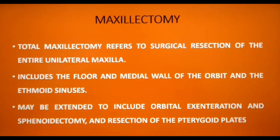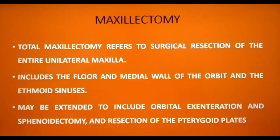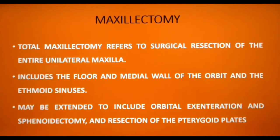This includes resection of the floor and medial wall of the orbit and also the ethmoid sinuses. The osteotomies or resection may be extended to include orbital exenteration — meaning removal of complete orbital contents — as well as sphenoidectomy and resection of the pterygoid blades.